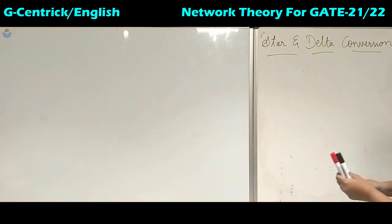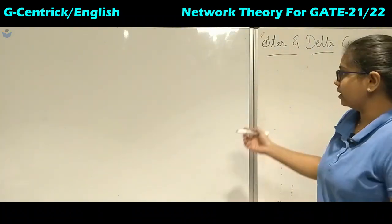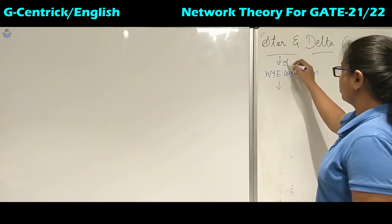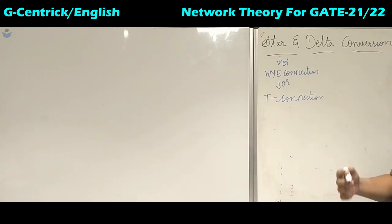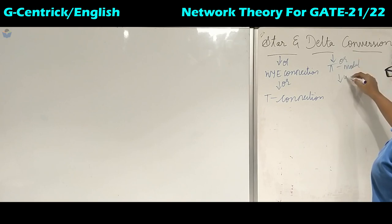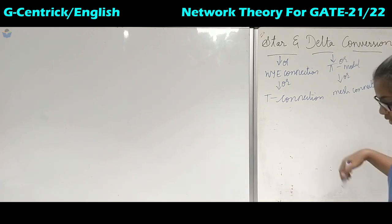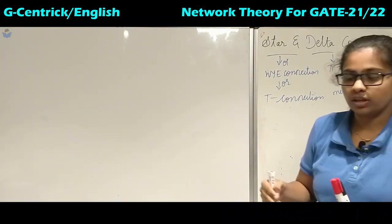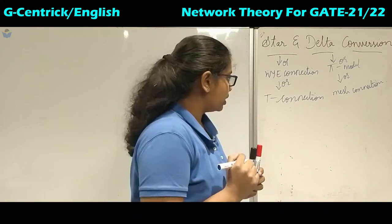So basically what do we mean by star? It has got two other names: one is Y connection and the other name is T connection. Similarly, delta also has two names — one is pi model connection and the other is mesh connection. The meaning of mesh is the smallest loop that does not have any other loop inside it — that is the smallest closed path. When we study mesh analysis we will see what the term mesh means.